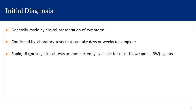A particular challenge in recognizing category A agents is that all of them have a prodromal or early presentation that looks a lot like the flu. Their unique characteristics don't emerge until after that early prodromal phase. It's important to maintain a heightened level of vigilance. In medicine, common things are common, but if we don't think outside the box about other possible causes of a clinical presentation, we may miss or be delayed in recognizing a biological event.